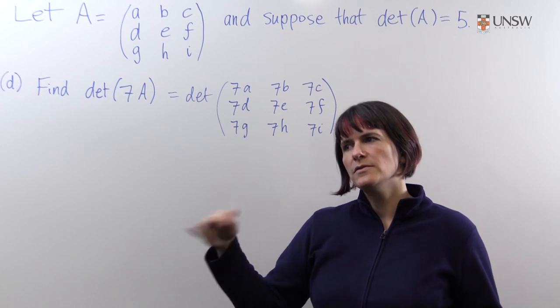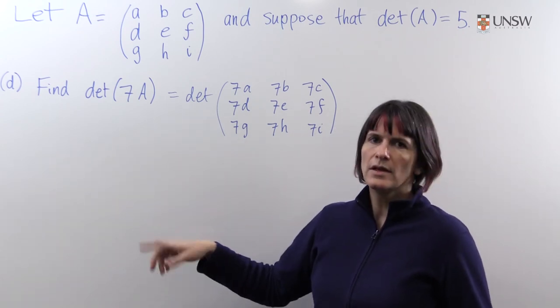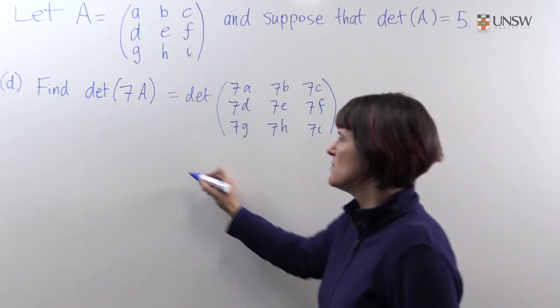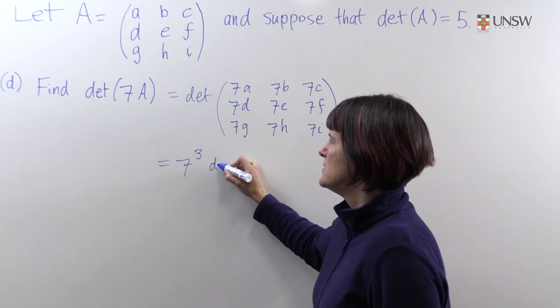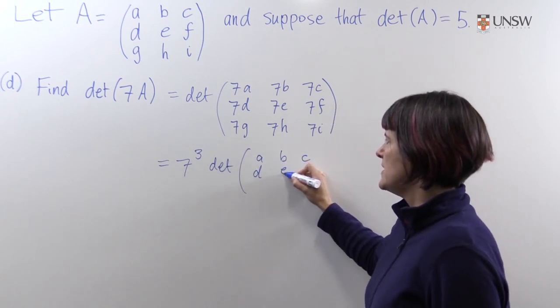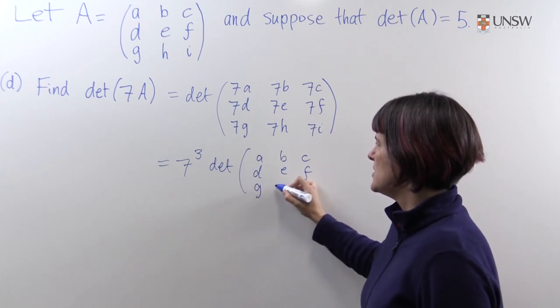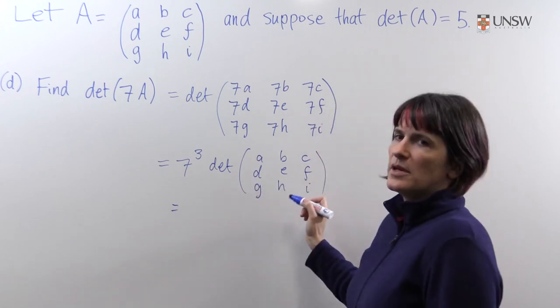And we can see that every row has been multiplied by seven. So just as we did in the first example, we could divide each of these rows by seven, and that will bring a factor of seven to the front. Rather than step through all of this, we can just write the answer down. This is seven cubed times the determinant of A, B, C, D, E, F, G, H, I, which is the determinant of A here.